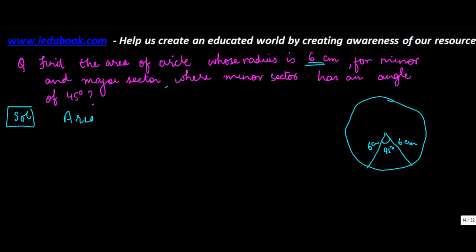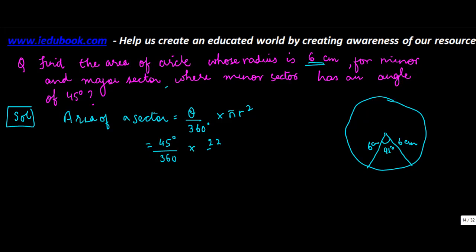The area of a sector is equal to theta upon 360 degrees into pi r squared. Here, theta is 45 degrees upon 360 degrees, into pi which is 22 upon 7, into r squared — that is 6 into 6.